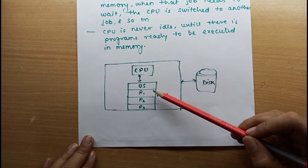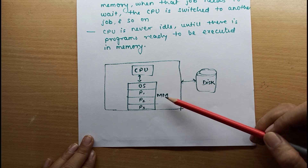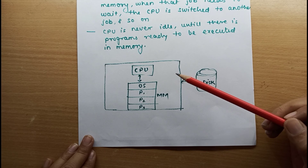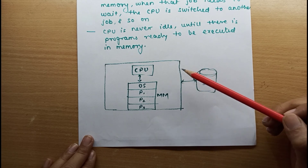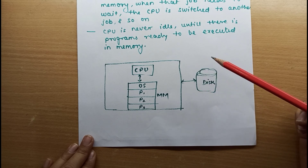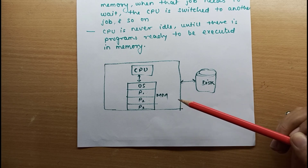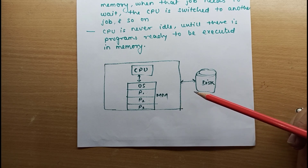When that program is allocated to the CPU or selected by the CPU, it is known as a process. A program in execution is called a process. So a process is an active entity actually executing on the CPU, while a program is a passive entity. Program in execution is called process.